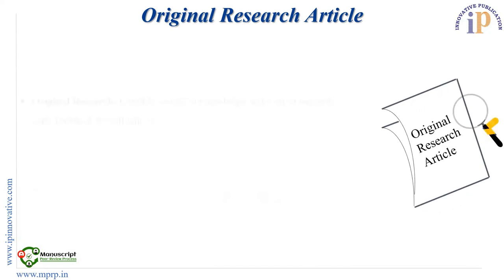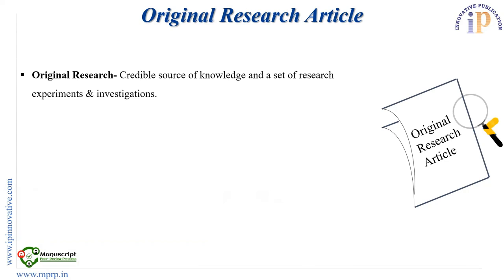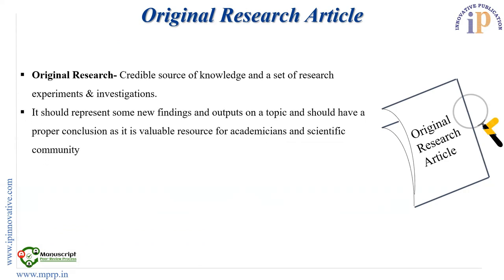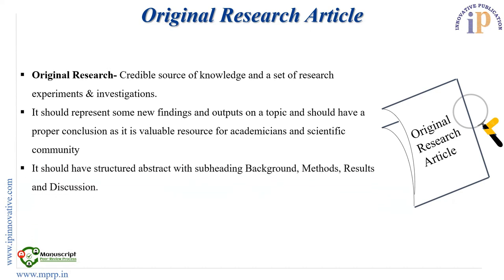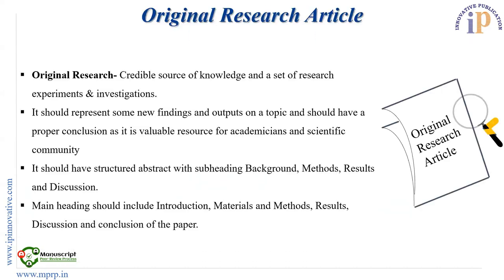If we talk about the original research article, it is a credible source of knowledge and a set of research experiments and investigations. It should represent new findings and outputs on a topic and should have a proper conclusion, as it is a valuable resource for academicians and the scientific community. The headings of a research paper should include introduction, materials and methods, results, discussion, and conclusion. Very importantly, a research article should have a structured abstract, meaning the abstract should also be divided into subparts.